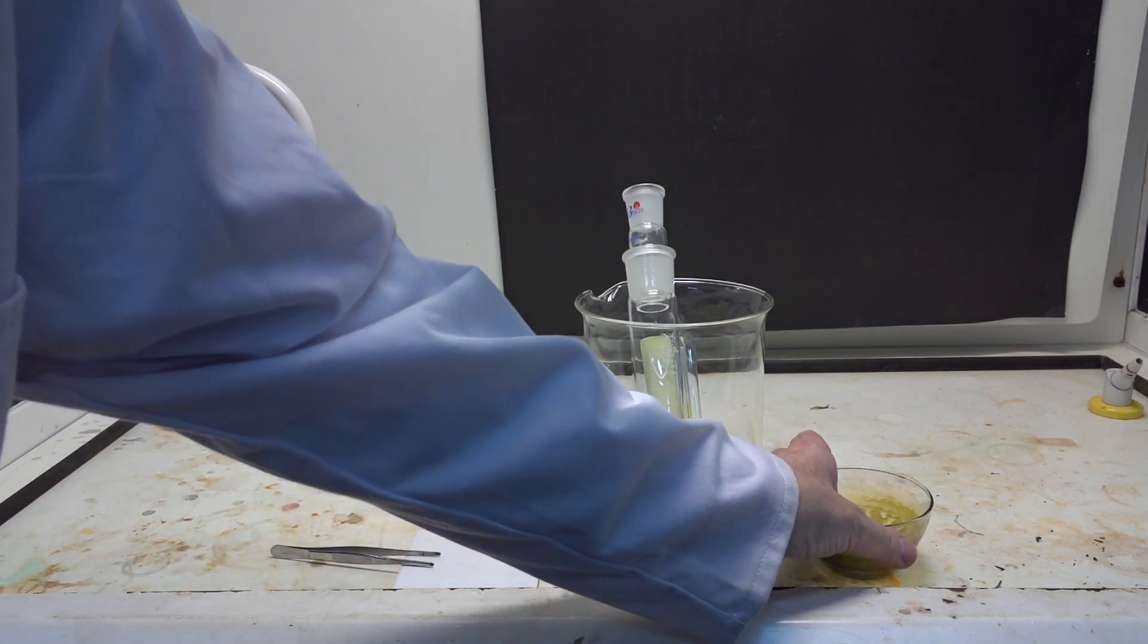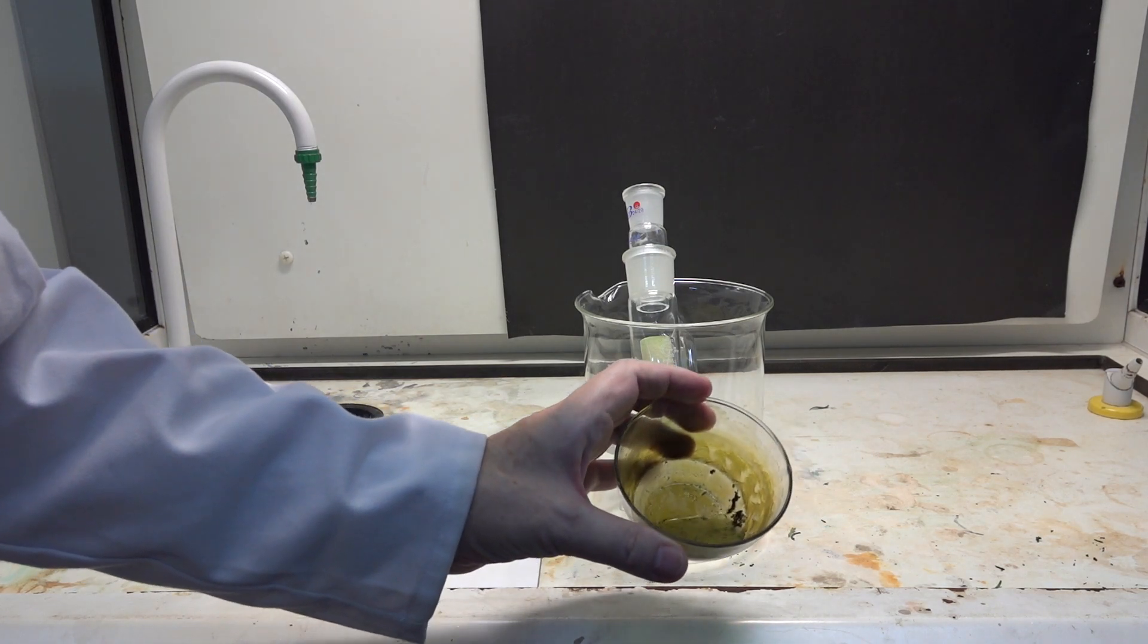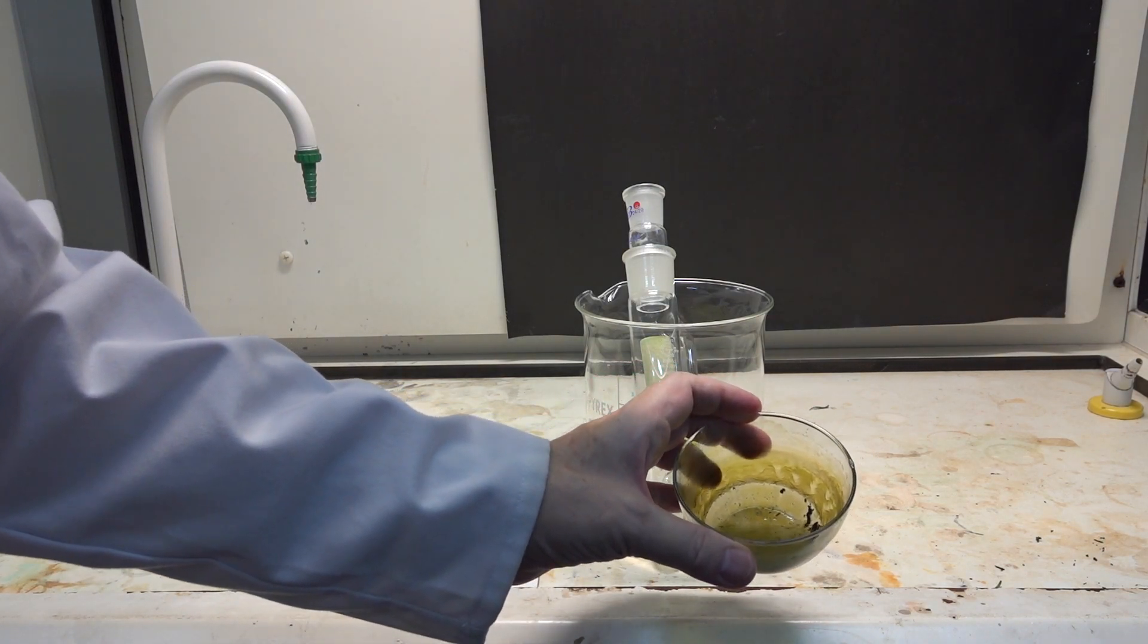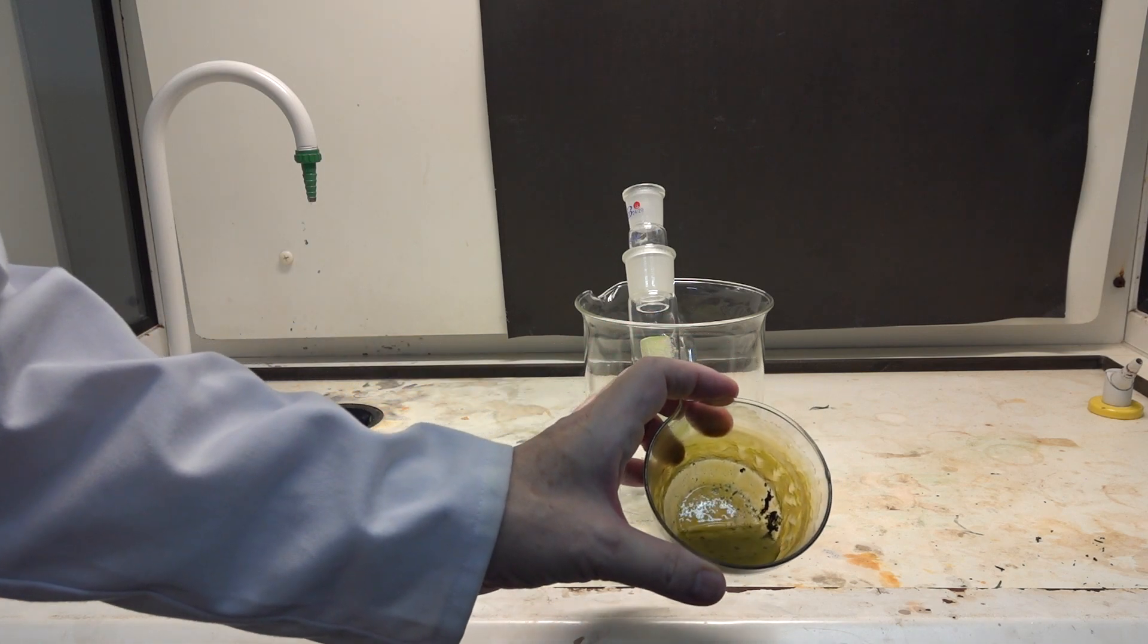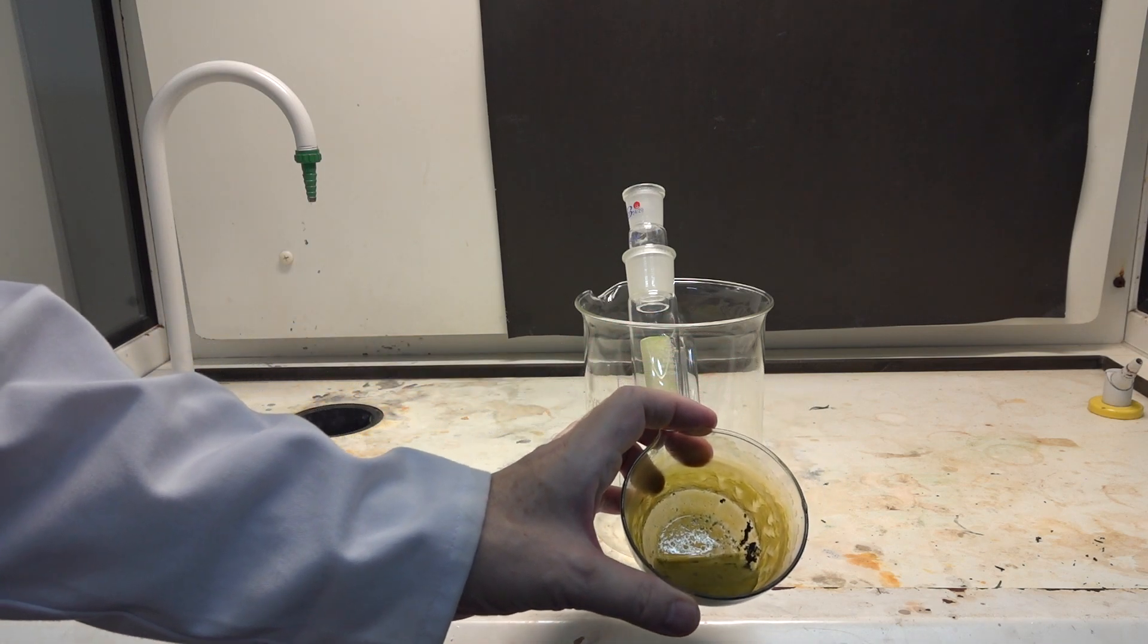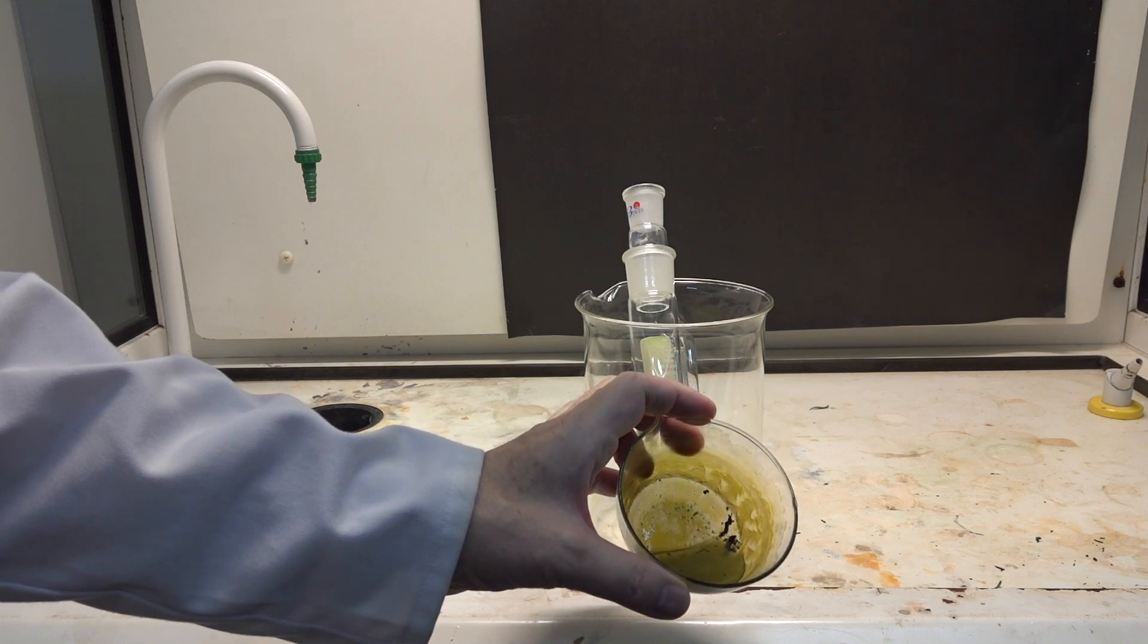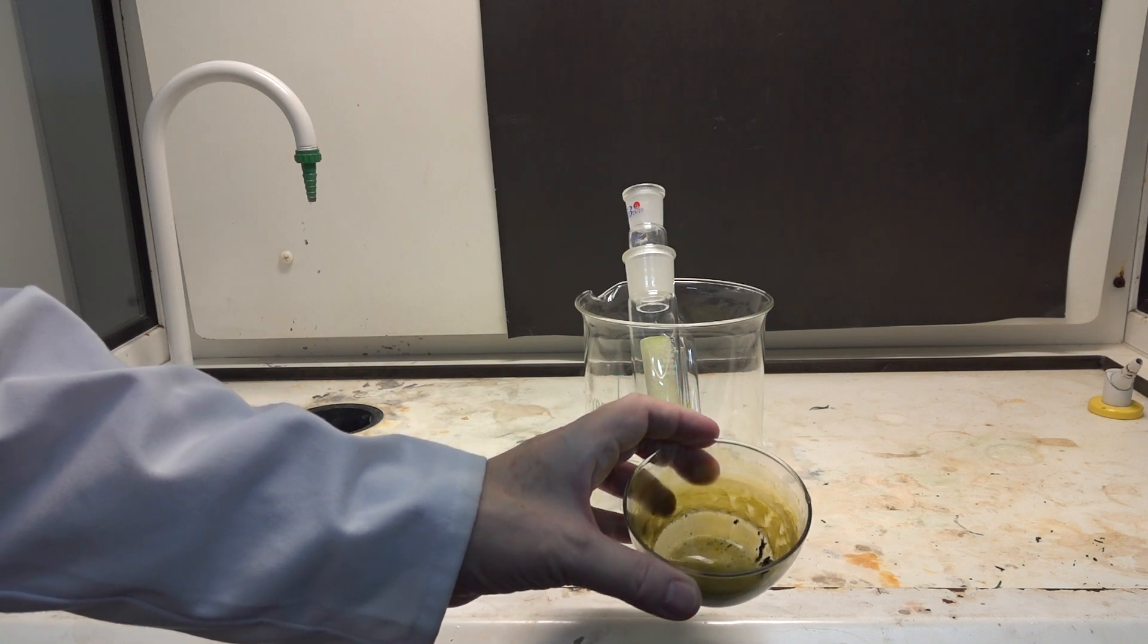The ethanol from the Soxhlet extraction was placed in this evaporating basin and left to evaporate in the fume cupboard overnight. You can see the volume has reduced from approximately 140 mils to about 10 to 15 mils in the bottom there.